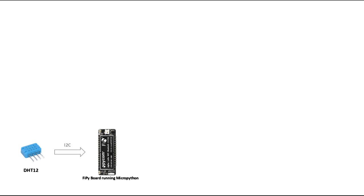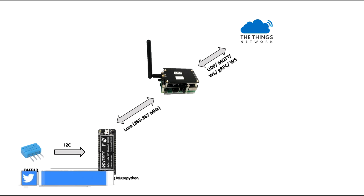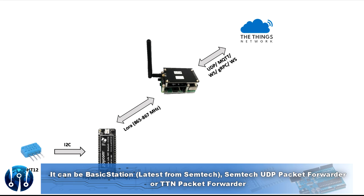So over here we will have different stages of data flow. From the DHT12 sensor to the FiPy board, which involves the I2C interface, wherein we will be reading data from the DHT12 registers to the module. We will be sending the data through LoRa protocol using the 865 to 867 MHz frequency band to the TTN server, through a TTN gateway which communicates via an XIG gateway from LoRa to the TTN server. The gateway sends data using UDP, MQTT, WebSocket, or gRPC communication protocol.